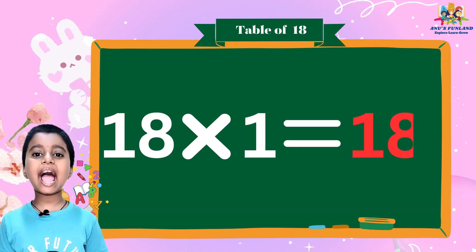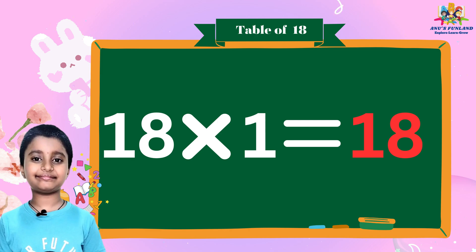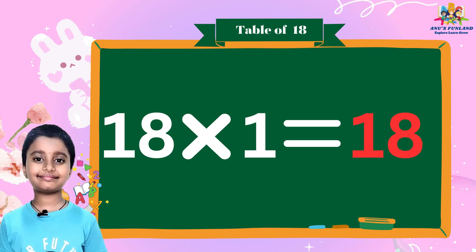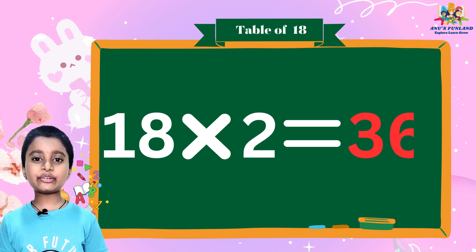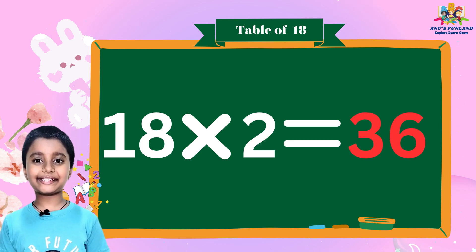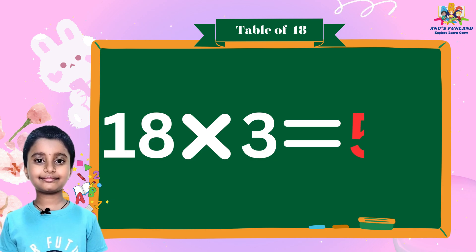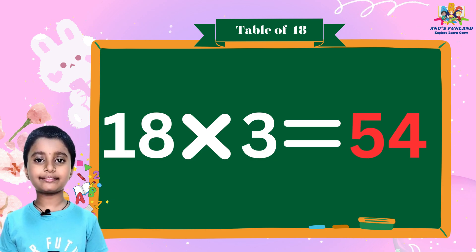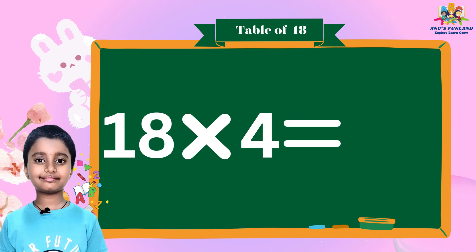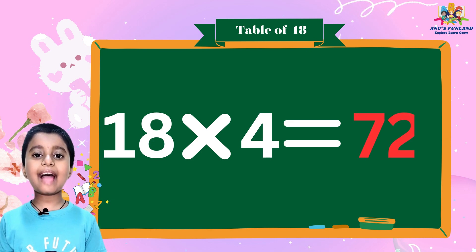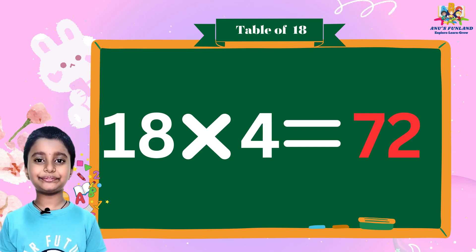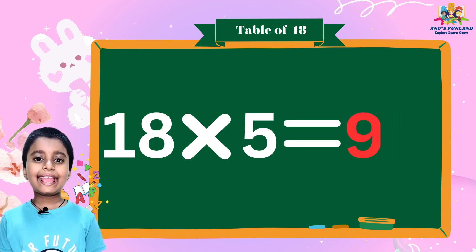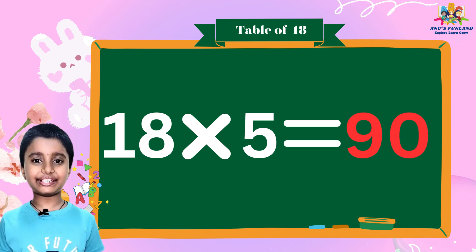18×1 is 18, 18×2 is 36, 18×3 is 54, 18×4 is 72, 18×5 is 90.